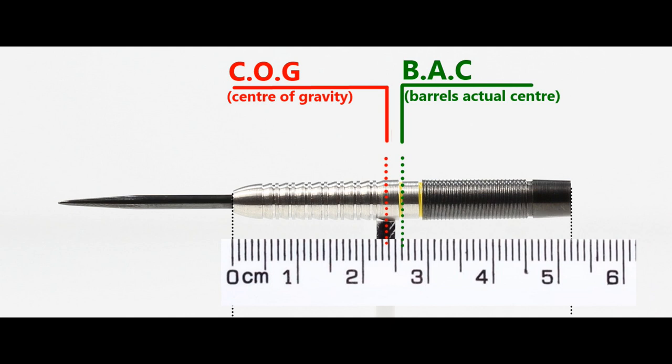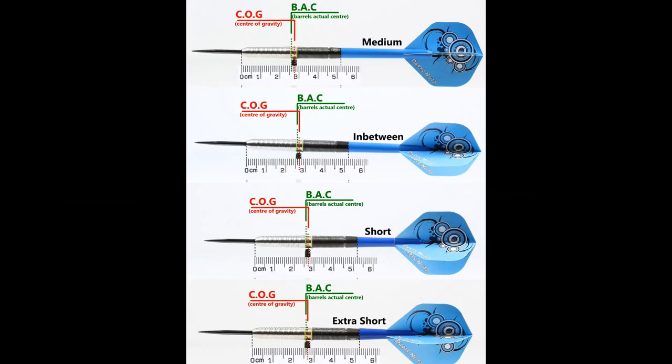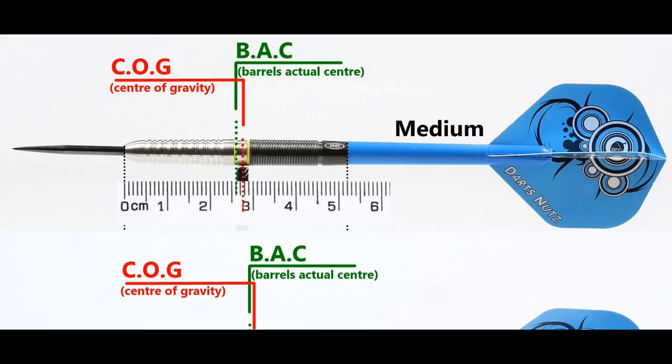It's a little awkward to balance with the indentation but with nothing attached the balance is front of center. With the supplied setup it moves just behind and this is the balance with medium in between short extra short stems and standard flights.